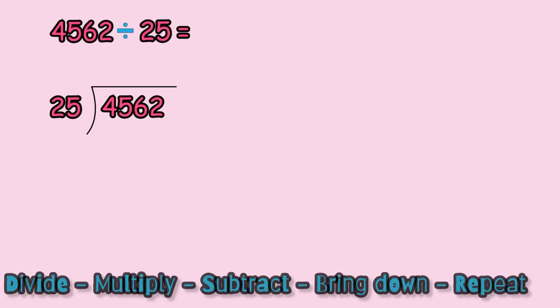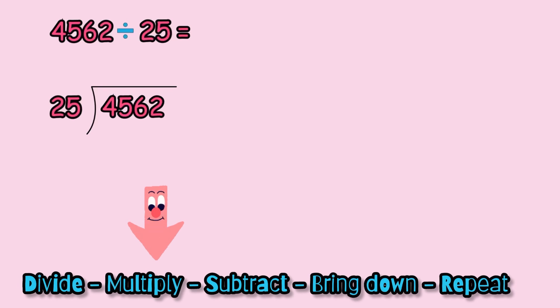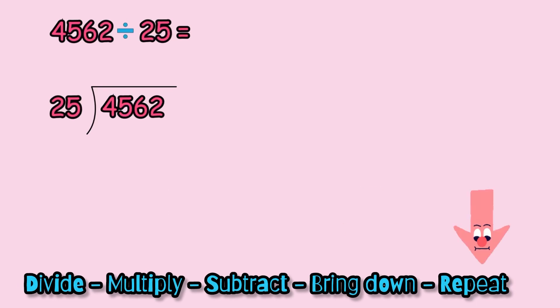Now we're ready to begin with the division process which is at the bottom of your screen: divide, multiply, subtract, bring down, and then repeat. So now we're going to look at the dividend and we're going to take the number that we can divide into 25. It could not be 4 because we cannot divide 4 into 25, so it must be 45.